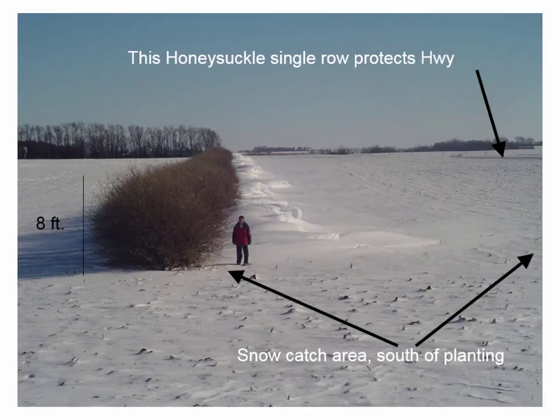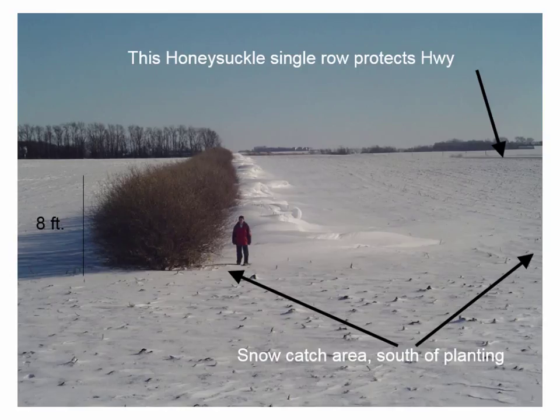There are many different types of snow control options. We're looking at a living snow fence here — this is a honeysuckle planting that's protecting a highway up in the corner. This is a really good example of a living snow fence. You have these shrubby species that create about 50 percent porosity at about eight feet high, which is a really good height for a snow fence. You can see it catching the snow on the leeward side.